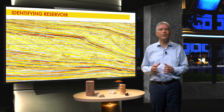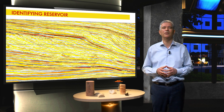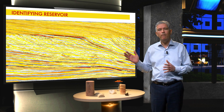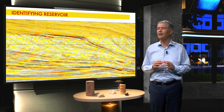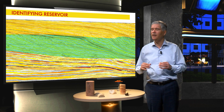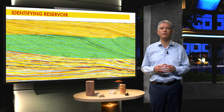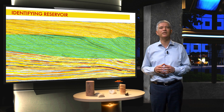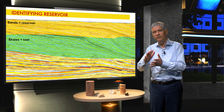Can we predict the presence of reservoirs or seals from seismic? The answer is sometimes. The seismic line shows parallel near-horizontal seismic reflectors, indicated in yellow. The reflectors steepen their dips, indicated in green. An experienced geologist will recognize this pattern as deltaic deposits, and from that predicts that sands will be present in the parallel near-horizontal reflectors, and shales in the steeper dips.